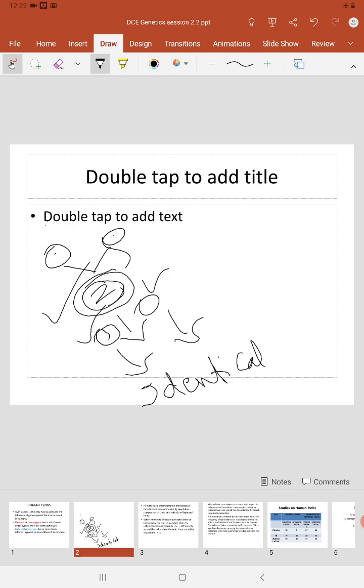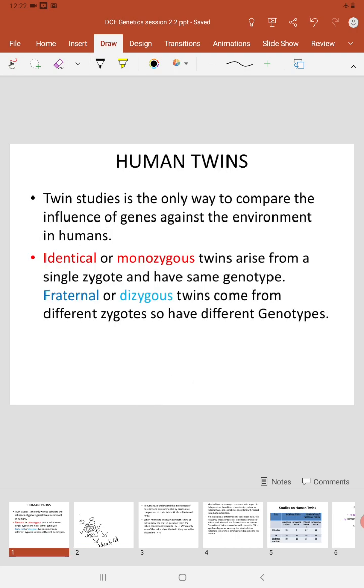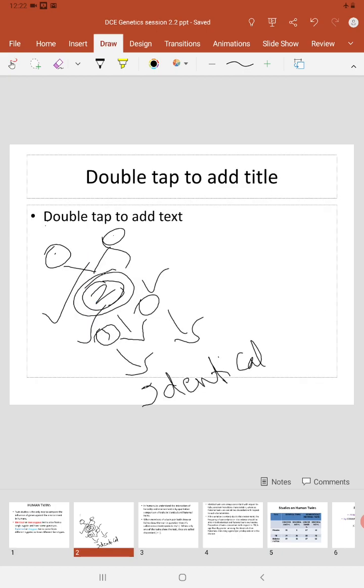This is identical or monozygous twins. Coming to fraternal or dizygous twins, this happens rarely in human beings. Generally, a female produces only one egg during one menstrual cycle. In between her periods, only one egg will be released and that gets fertilized when sperms are available. But very rarely, a female will produce two eggs, will release two eggs from the ovary.